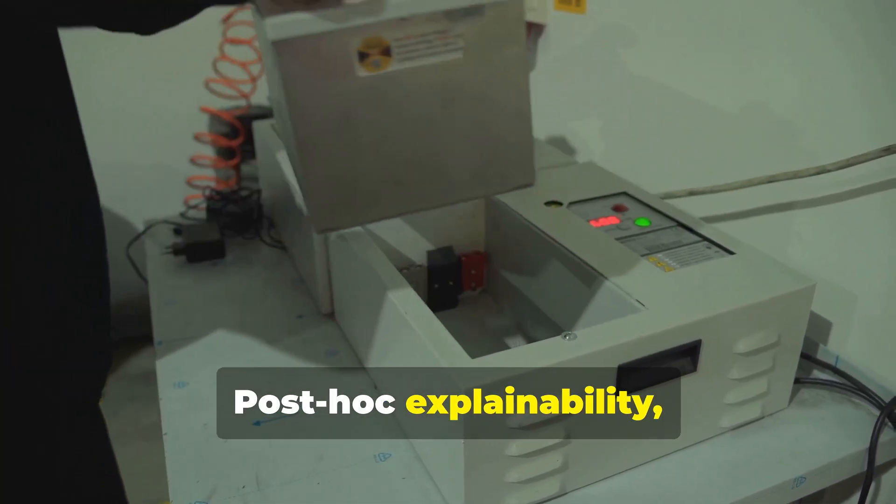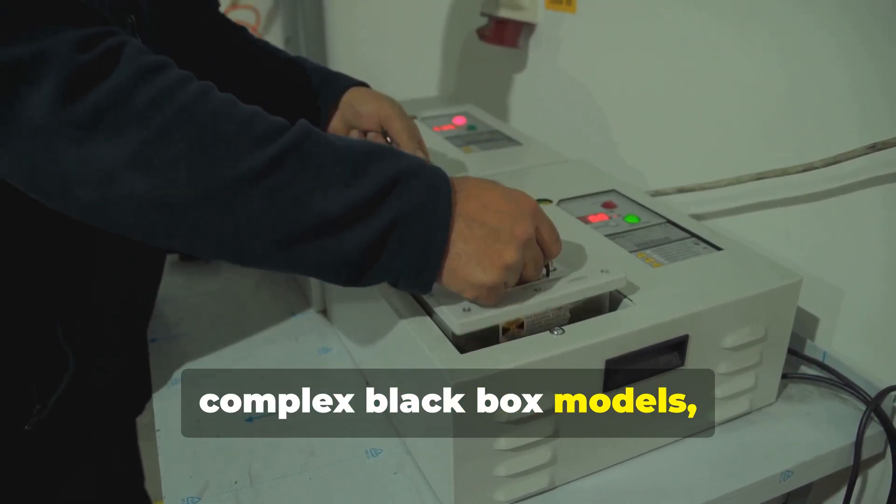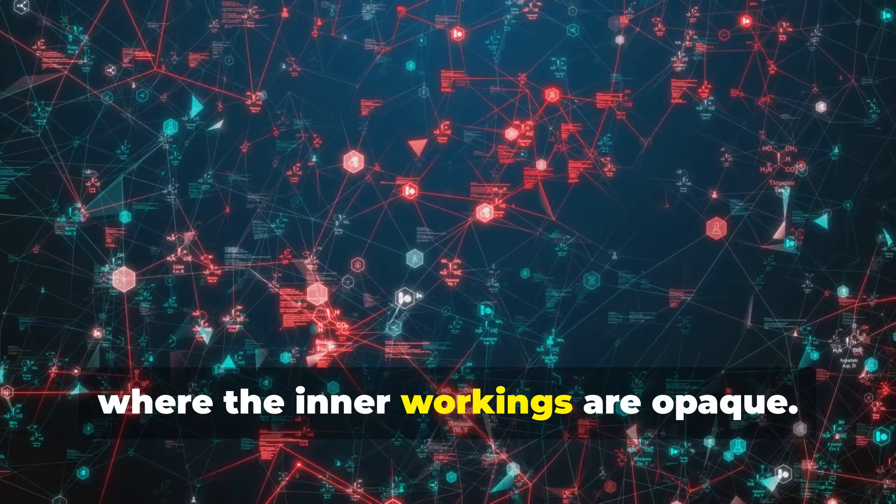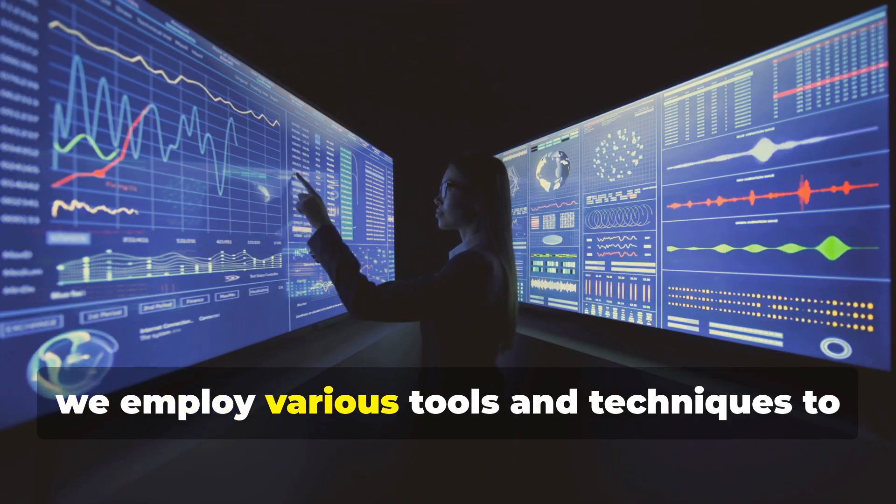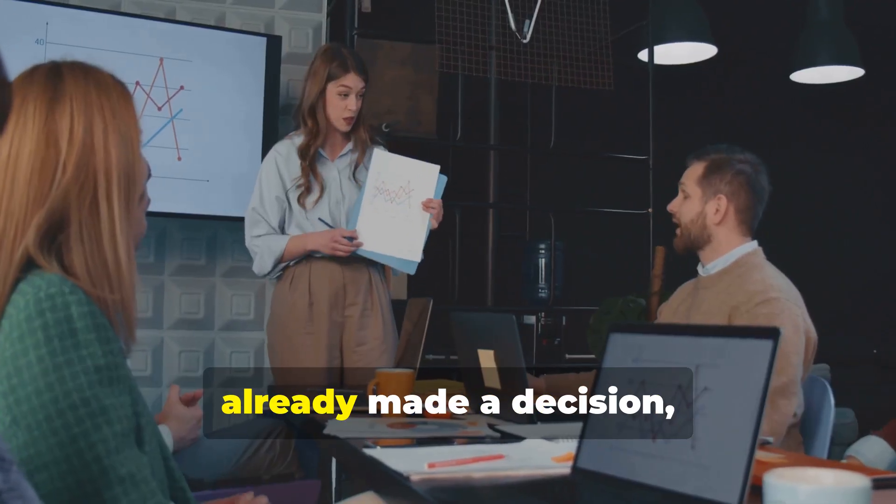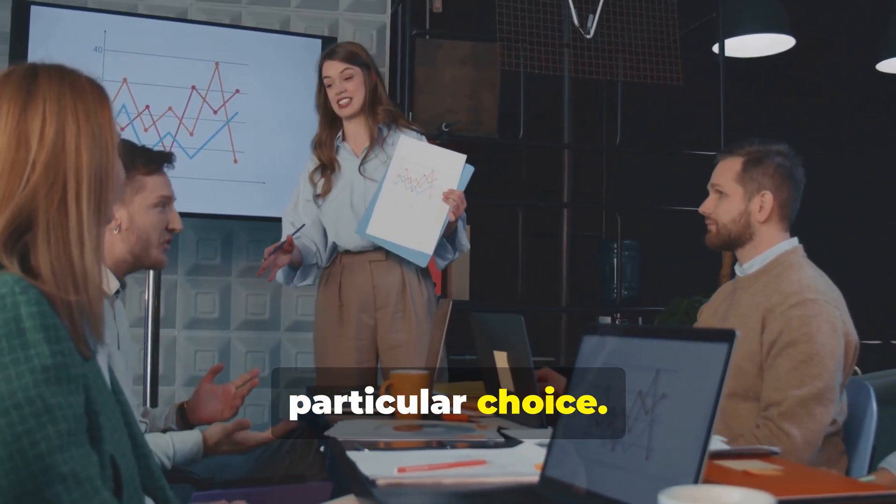Post-hoc explainability, meaning after the event, is applied to complex black box models, such as intricate deep neural networks, where the inner workings are opaque. In these cases, we employ various tools and techniques to generate explanations after the model has already made a decision, trying to understand why it made that particular choice.